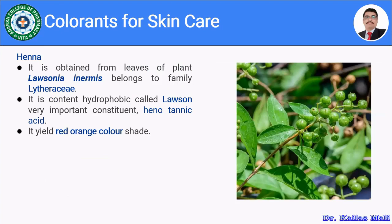Then henna. Henna is obtained from leaves of the plant Lawsonia inermis, belonging to family Lythraceae. It contains the hydrophobic compound lawsone along with phenotannic acid and gives the red-orange color. It is used to give red-orange color to various skin care cosmetics. Henna is also used in hair care products.